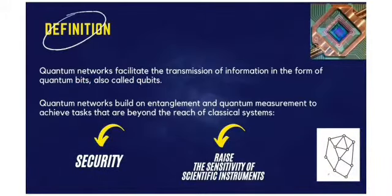Quantum networks facilitate the transmission of information in the form of quantum bits, also called qubits. Quantum networks build on entanglement and quantum measurement to achieve tasks that are beyond the reach of classical systems, such as security.